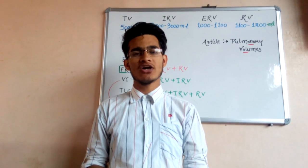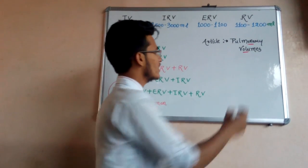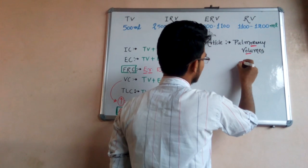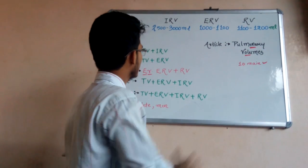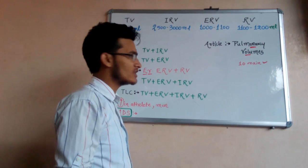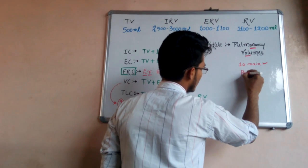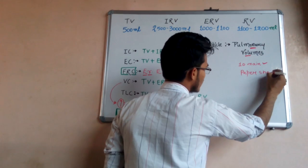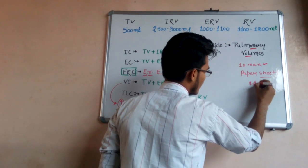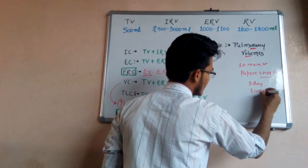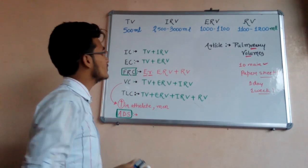Hello guys, welcome back to my YouTube channel, Biology at Your Fingertips. Today I'm going to make a requested video which is very important from an examination point of view. We will be learning the pulmonary volumes — there are 10 main pulmonary volumes. You have to watch the video, note down important points on a paper sheet, and revise it at least twice: once after a day and once after a week, so everything is on your fingertips. You only need to remember four respiratory volumes.